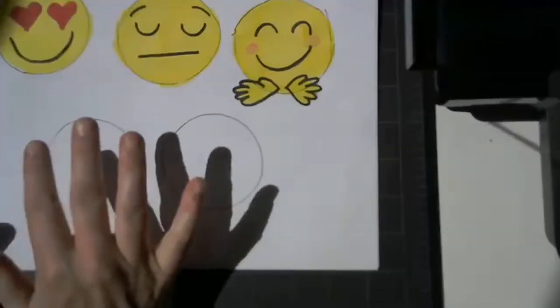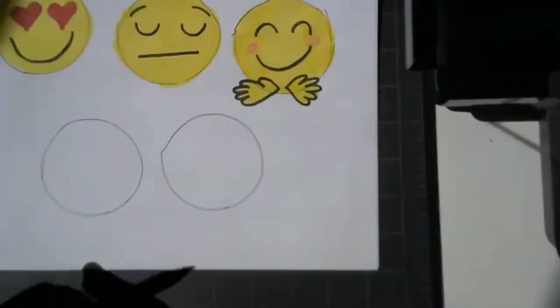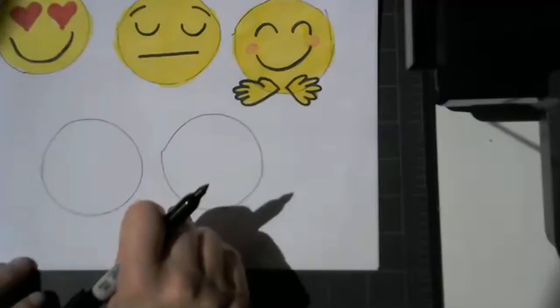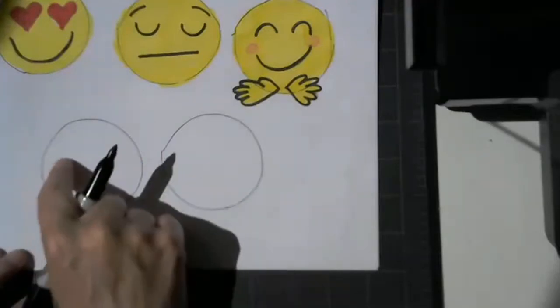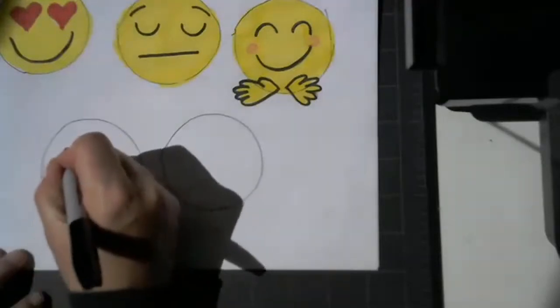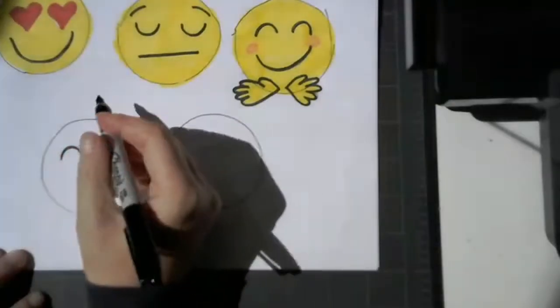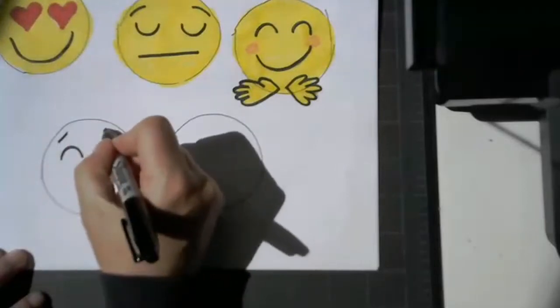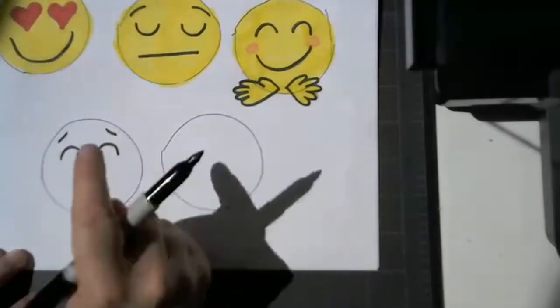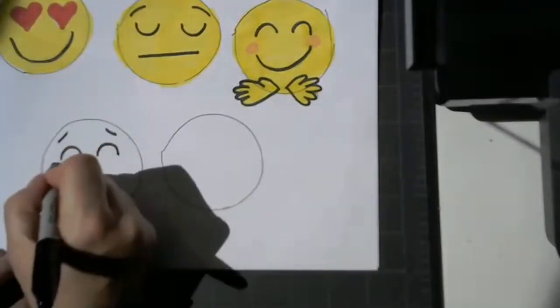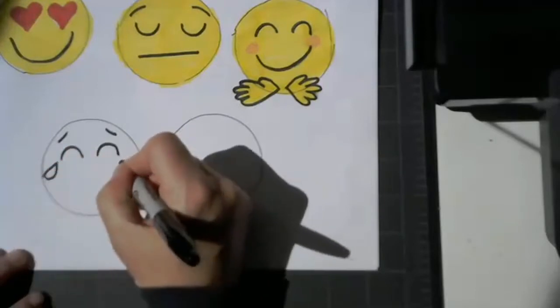This next emoji I use all the time when I'm texting with my friends. It is the laughing so hard that I'm crying. So we're going to start with two frowny lines for the eyes. It seems silly that we're using frowny lines for the funny ones. And then my eyebrows. And underneath on the corners, we're going to do two teardrops because we're laughing so hard that we are crying.